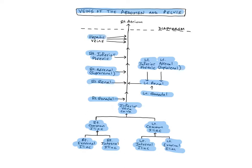The hepatic veins are usually three veins that drain the sinusoidal capillaries of the liver directly into the inferior vena cava. They are the first vessels that drain into the inferior vena cava below the diaphragm. The inferior vena cava is the largest vein in the body, and it drains its large volume of blood into the right atrium of the heart.